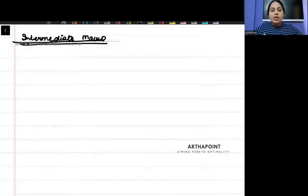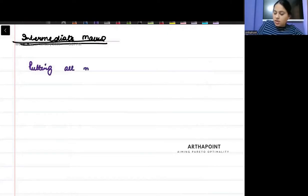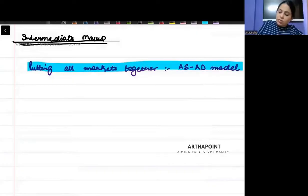Hello beta. Good afternoon. In today's class, we are going to talk about chapter seven, which is the AS-AD curve. It is putting all markets together, the AS-AD model. So please write down putting all markets together, the AS-AD model. In this class, we're going to talk about the AS-AD model as a whole.